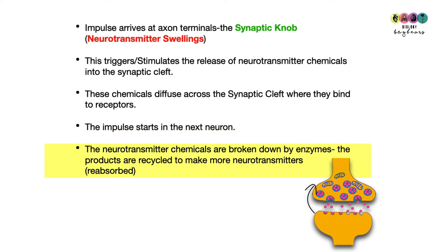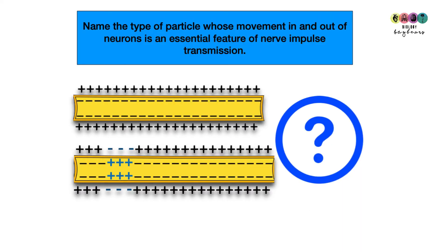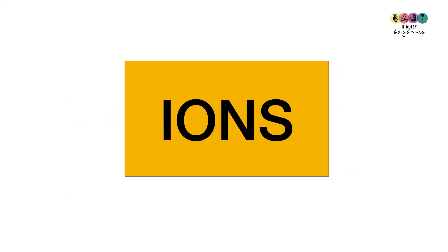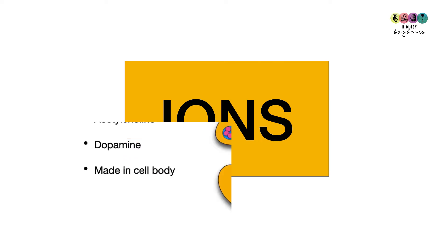Enzymes break down those neurotransmitter chemicals and the products are reabsorbed. Next question — an easy one: name the type of particle whose movement in and out of neurons is an essential feature of nerve impulse transmission. It's all about the movement of ions, those charged particles — in particular sodium ions, but on our course just knowing ions is sufficient.